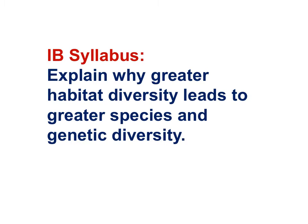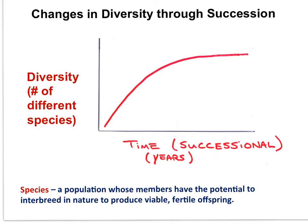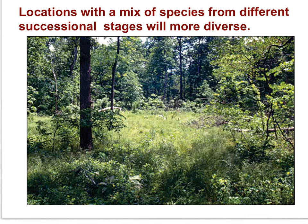With this IB syllabus statement, here is a question: can you explain why greater habitat diversity leads to greater species and genetic diversity? Diversity increases through successional time and then reaches a plateau as there are a finite number of different species in any location. Diversity increases as the habitat becomes more complex during succession. A mixture of species from different successional stages will be more diverse than locations that support only early or only late successional species.